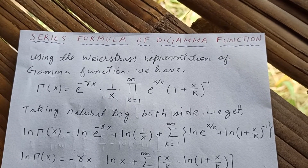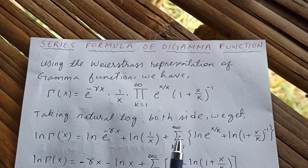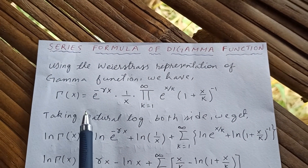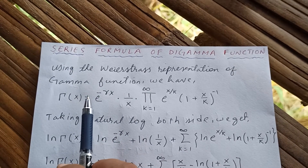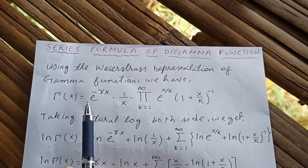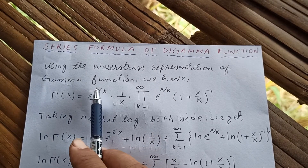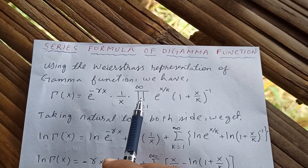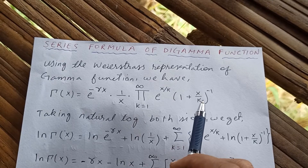Hello guys, thanks for watching. Today I'd like to derive a series formula for the digamma function. We are going to represent the digamma function as a series using the Weierstrass representation of the gamma function. The Weierstrass representation is: gamma of x equals e to the negative gamma times x, where this small gamma is the Euler-Mascheroni constant, times one over x, times the product from k equals one to infinity of e to the x over k times one plus x over k, inverse.